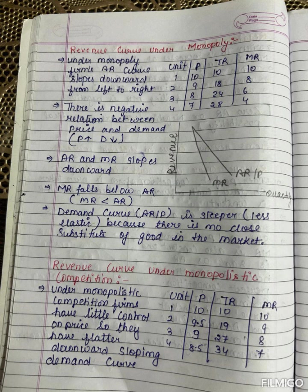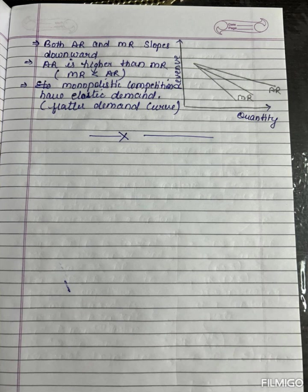As a result, average revenue and marginal revenue have a negative slope, while average revenue is higher than marginal revenue in case of both monopoly and monopolistic competition.